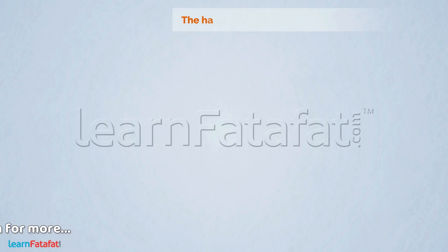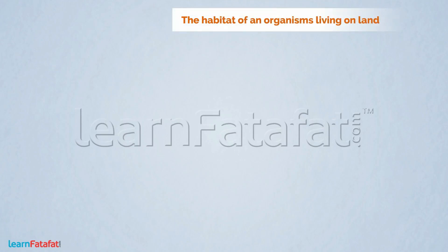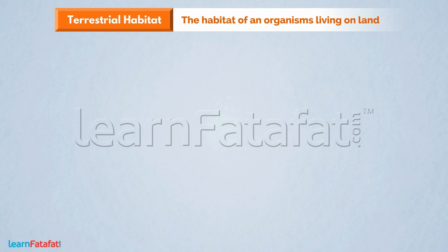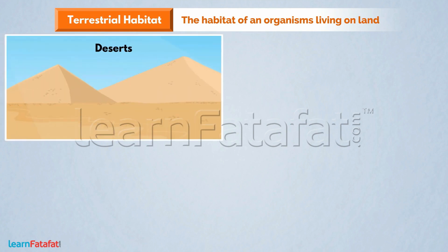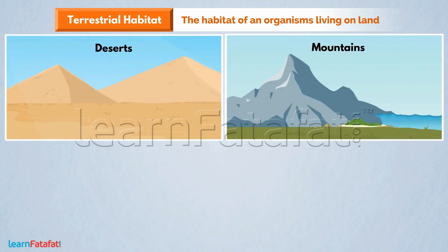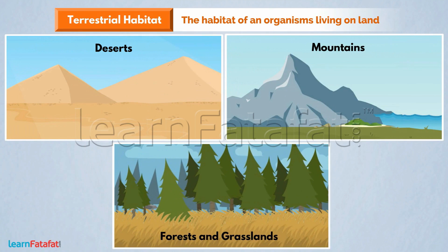The habitat of an organism living on land is called a Terrestrial Habitat. Some of the terrestrial habitats are deserts, mountains, forests, and grasslands.